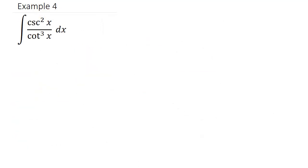Let's take a look at one last problem. We have cosecant squared and cotangent cubed. They're both raised to a power. Looking at cotangent, what's the derivative of cotangent? It's negative cosecant squared. So that gets us everything except the negative sign, which we can take care of just like in the previous problem.